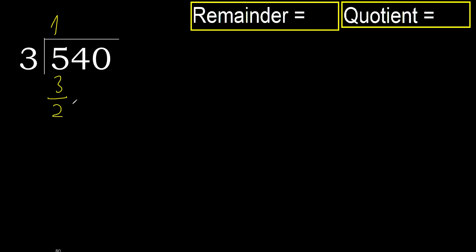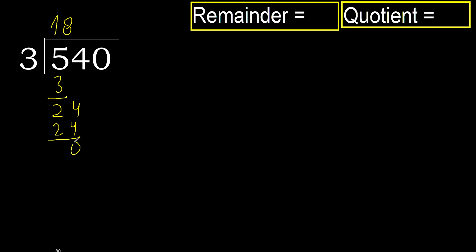Next, bring down: 24. 3 multiplied by 9 is greater. 3 multiplied by 8 is 24 — 24 is not greater. Ok, subtract.